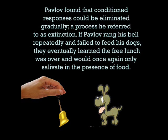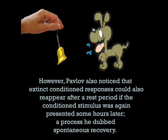Pavlov found that conditioned responses could be eliminated gradually, a process he referred to as extinction. If Pavlov rang his bell repeatedly and failed to feed his dogs, they eventually learned that free lunch was over and would once again only salivate in the presence of food. However, Pavlov also noticed that extinct conditioned responses could reappear after a rest period if the conditioned stimulus was again presented some hours later, a process he dubbed spontaneous recovery.